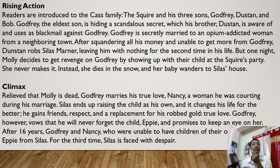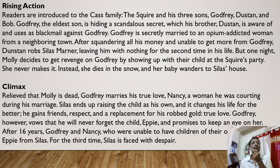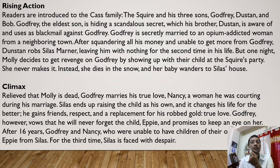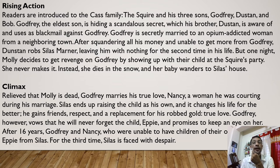Climax — this is the main portion of the novel where the story reaches its peak. Receiving word that Molly is dead, Godfrey marries his true love Nancy, a woman he was courting during his secret marriage. Silas ends up raising the child as his own, which changes his life for the better — he gains friends, respect, and a replacement for his robbed gold. Godfrey, however, vows he will never forget the child Eppie and promises to keep an eye on her. After 16 years, Godfrey and Nancy, unable to have children of their own, try to take Eppie from Silas — for the third time, Silas is faced with despair.